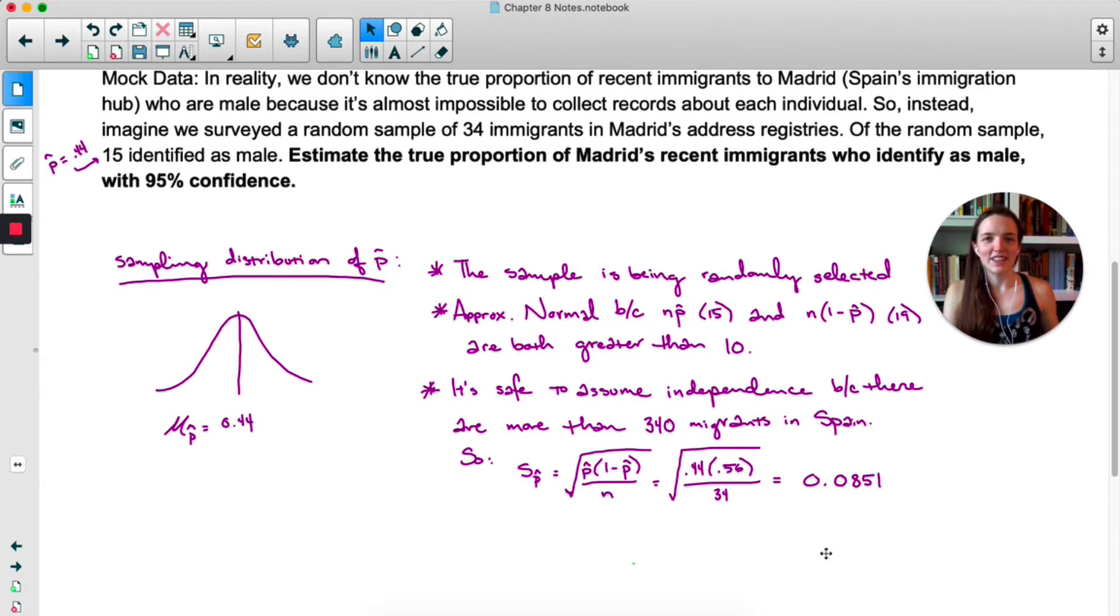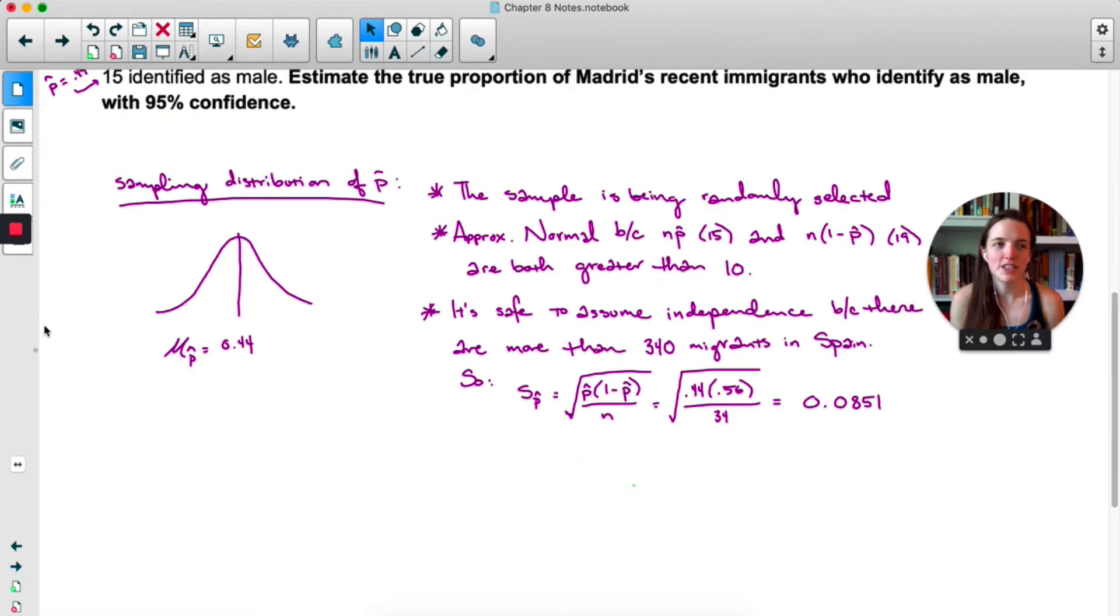And that describes the variability. That is not a very big spread. So, so far I haven't actually calculated the interval. I've just made sure that everything we're about to do is okay. Now in the book example we did 2 times the standard deviation and we added that and we subtracted that from our point estimate. In the book example it was X bar but here we're dealing with P hat. That 2 came from the empirical rule which said that 95% of the data in a normal distribution is within 2 standard deviations of the mean. But you may remember me clarifying when we did normal distributions, the empirical rule is an estimate. So about 95% of the data is within 2 standard deviations.